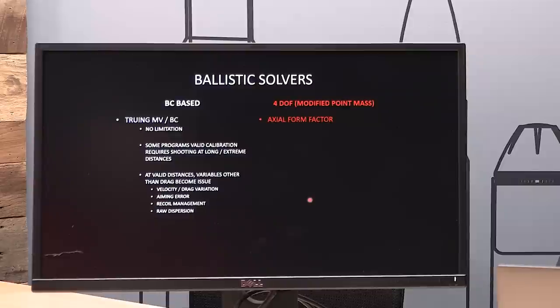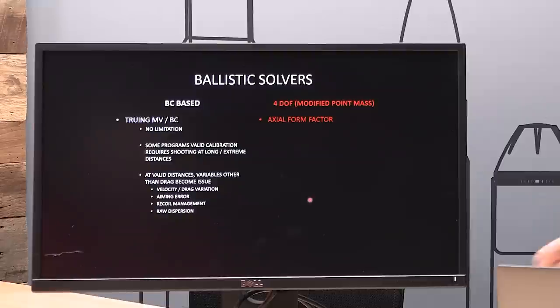Some programs require you to calibrate at extremely long distances where other things become problematic. At those really long distances, there are other variables coming into play besides drag. You're trying to say your drag is off, but velocity and drag variation, aiming error, recoil management, raw dispersion, raw group size — all that stuff is playing into where bullets go. But you're claiming that all those things are known and it's just bullet drag that's the problem. Well, that's an issue because it's probably not true.